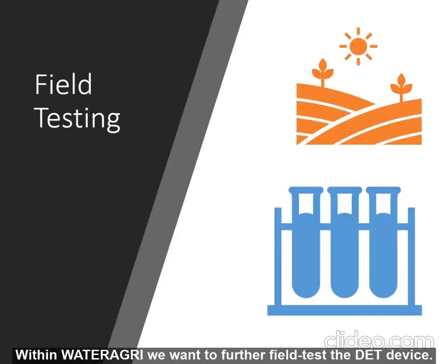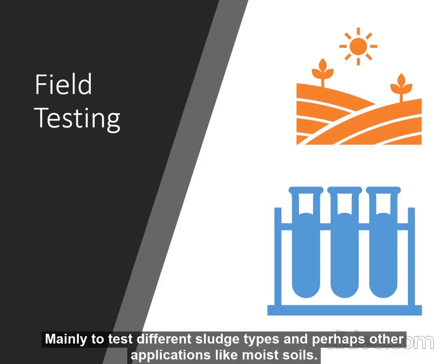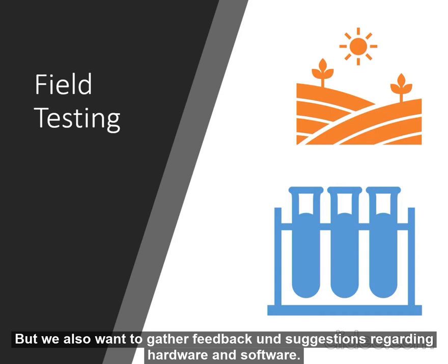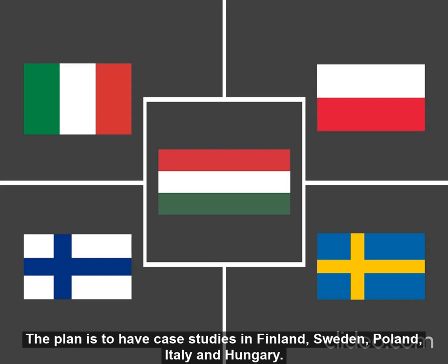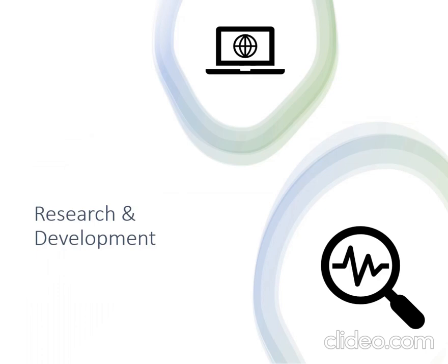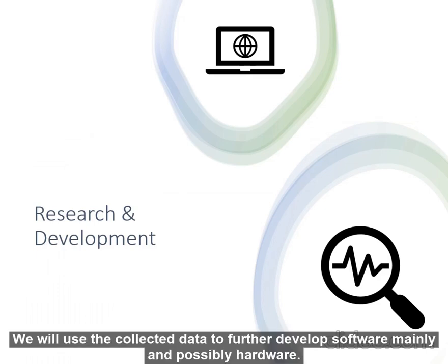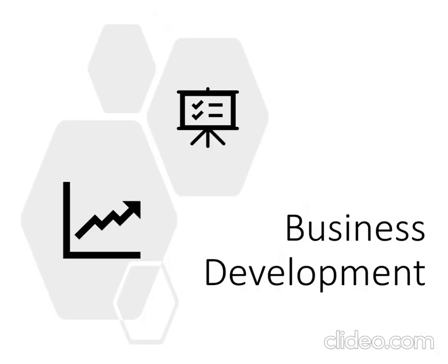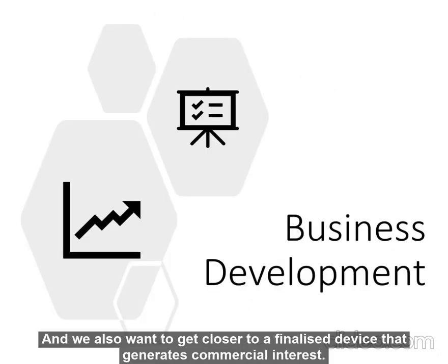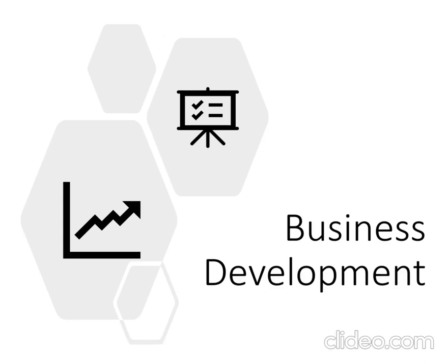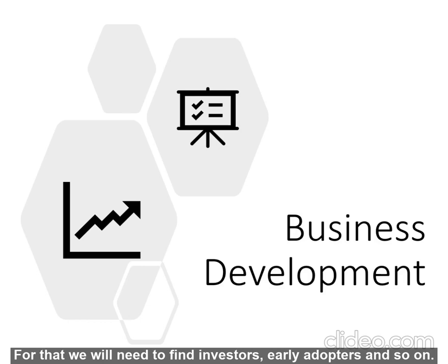Within Water Agri, we want to further field test the DET device. This is mainly to test different sludge types and perhaps other applications like moist soils. We also want to gather feedback and suggestions regarding hardware and software. The plan is to have case studies in several countries including Finland, Sweden, Poland, Italy, and Hungary. We will use the collected data to further develop the software and hardware if necessary, and get closer to a finalized device that generates commercial interest — for which we will need to find investors and early adopters.